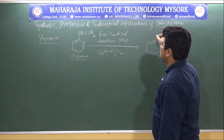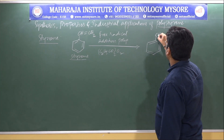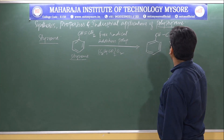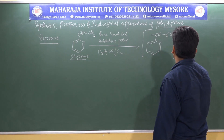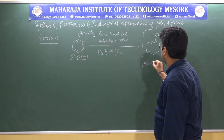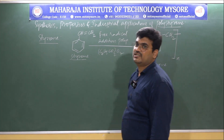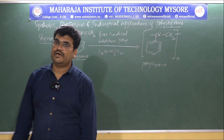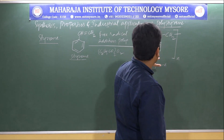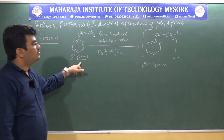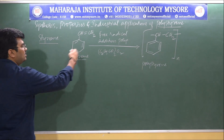The product polystyrene is represented as —CH(C6H5)–CH2—n. In this way, one can prepare polystyrene from styrene. This concludes the synthesis.